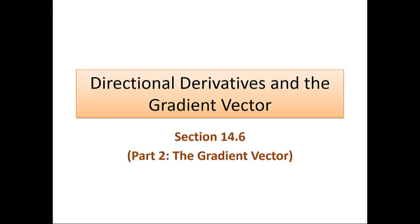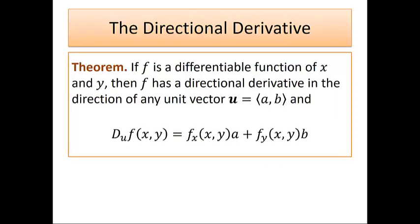Welcome to our second video from section 14.6, focusing on the gradient vector. In our last video we studied the directional derivative and saw that if f is a differentiable function of x and y, f has a directional derivative in the direction of any unit vector u, found by taking the partial derivative of f with respect to x times a, the x component of u, plus the partial derivative with respect to y times b, the y component of u.